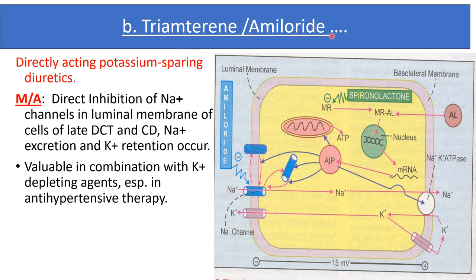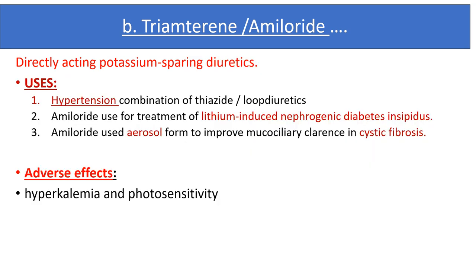Triamterene and amiloride are directly acting potassium-sparing diuretics. They directly inhibit sodium channels in the luminal membrane of cells at the distal convoluted tubule and collecting duct, so sodium excretion and potassium retention occur. They are valuable in combination with potassium-depleting agents especially in antihypertensive therapy. Amiloride is also useful for the treatment of lithium-induced nephrogenic diabetes insipidus and in aerosol form to improve mucociliary clearance in cystic fibrosis. Adverse effects of potassium-sparing diuretics include hyperkalemia and photosensitivity.